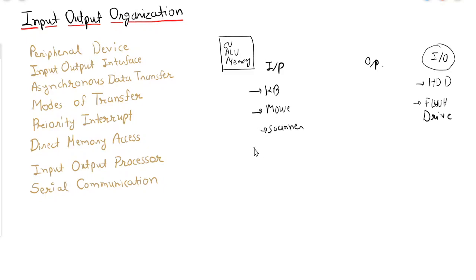Which are the output devices? Let's say monitor, then printer, then plotter, then we can say speaker. So these are the output devices.